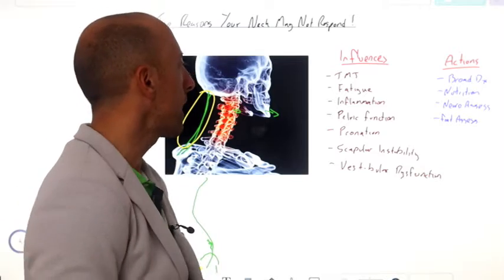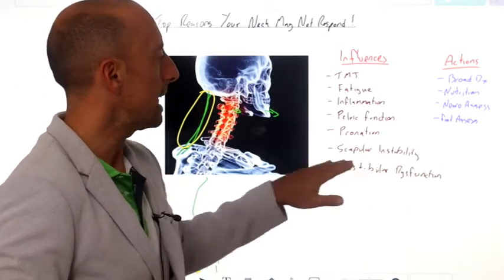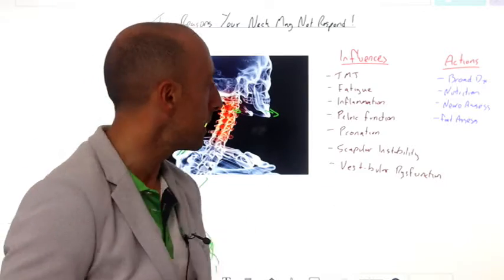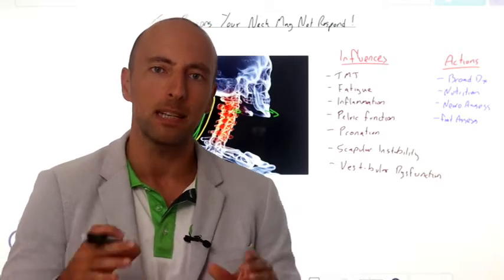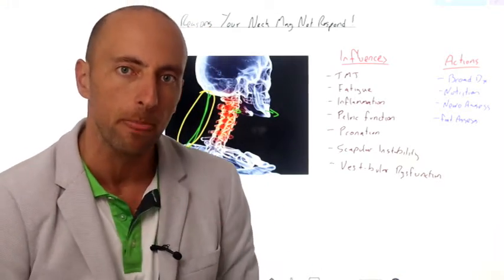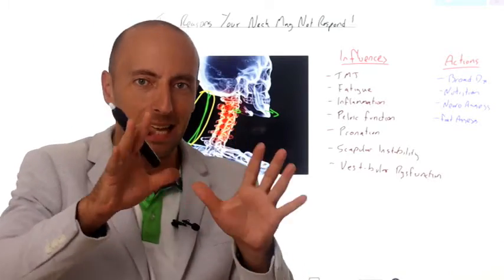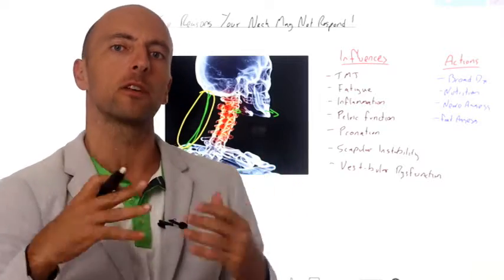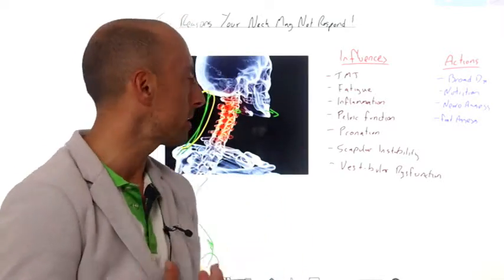Shoulder blade instability, so scapular instability, sorry about the writing, it's gone a bit funny there. Scapular instability is basically when your shoulder blades don't sit on the chest wall very effectively. When they don't sit on that chest wall very effectively, we get this movement that occurs. This often creates nerve entrapments and we get muscular spasms trying to stabilize that as well, especially again in these neck extensors, which can create problems.